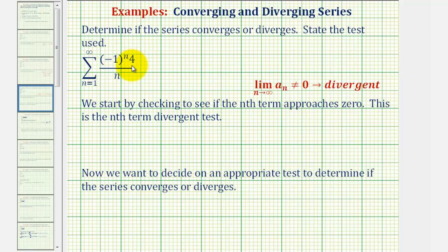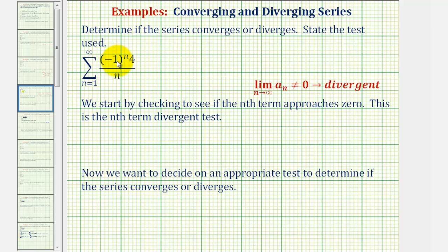We want to determine if the given infinite series converges or diverges, and we also want to state the test used. The first thing we should recognize about the given infinite series is that we have negative one raised to the power of n, which means this is an alternating series.